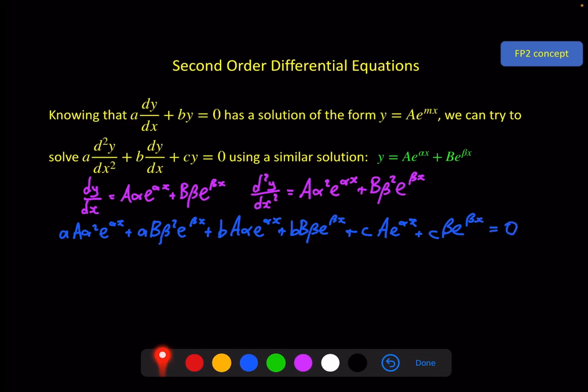Now that looks long and fairly horrible, but keep in mind all of the x parts are the same. So these can all interact quite nicely. And in fact, I'm going to factorize out ae^(αx) and be^(βx) into two big brackets giving us ae^(αx) times (aα² + bα + c) plus be^(βx) times (aβ² + bβ + c) is equal to zero.